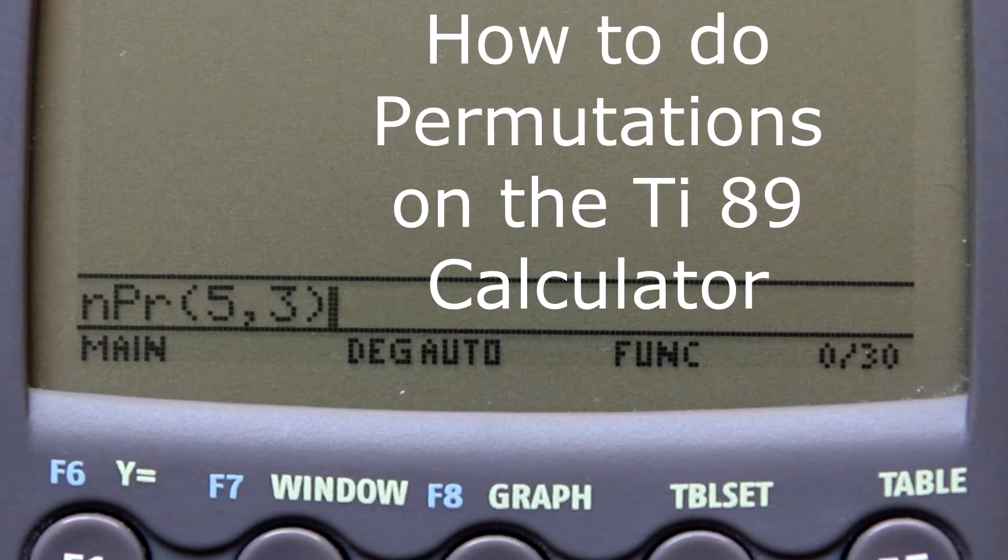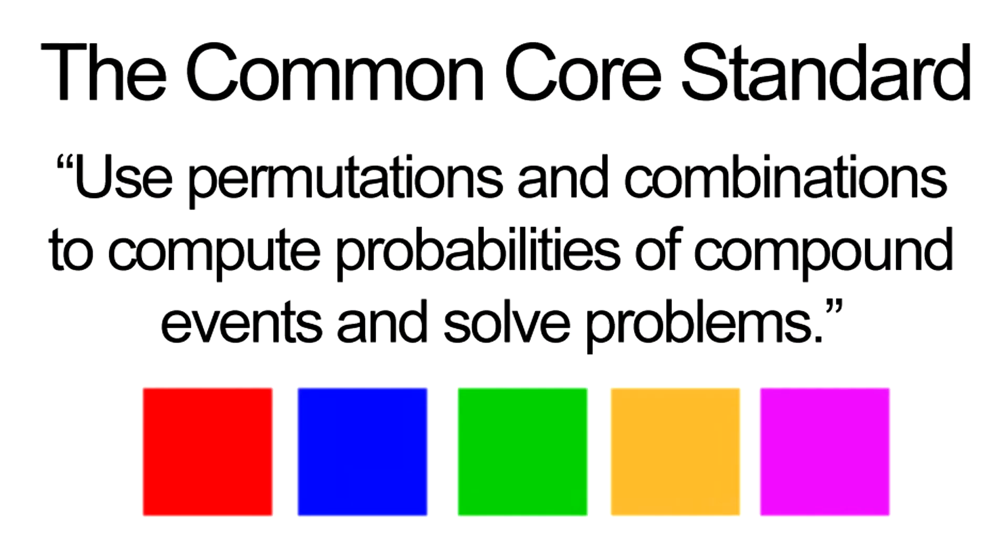How to do permutations on the TI-89 calculator. The common core related standard is use permutations and combinations to compute probabilities of compound events and solve problems.